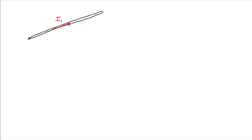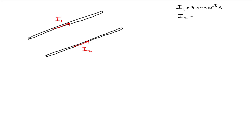Here we have a situation in which we have two different currents each contributing its portion of a magnetic field to a point in space. These currents are due to two long, straight wires that are parallel to each other. We'll call this wire 1, carrying current I1, and the second wire is wire 2 carrying current I2. Current I1 is equal to 3.00 mA, and current I2 is equal to 9.00 mA, which is 3 times the current of the first wire.